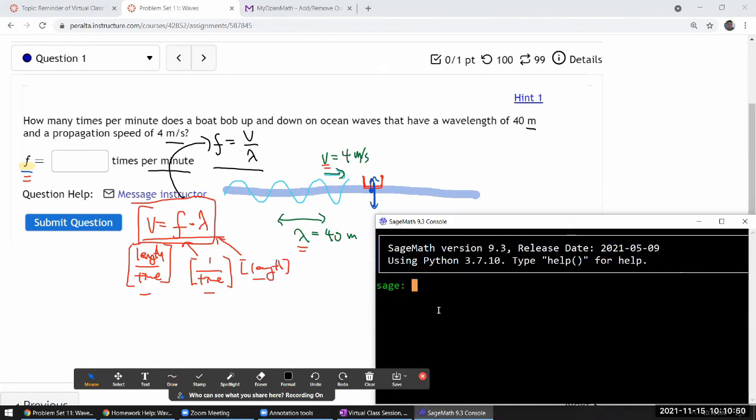So my answer in the times per second unit is the wave speed, 4 meters per second, divided by 40 meters. That will give me an answer... so it pops up and down 1 tenth of a cycle in a second.